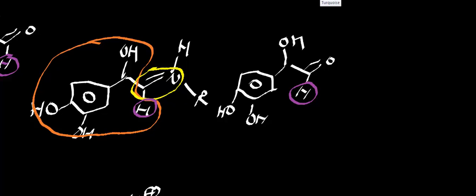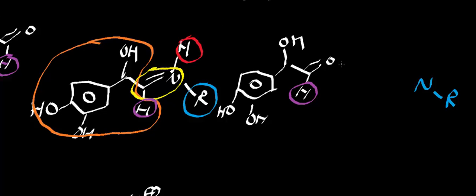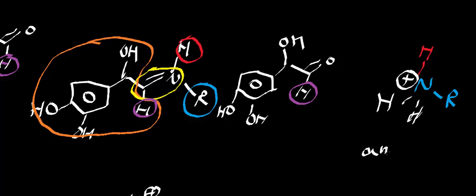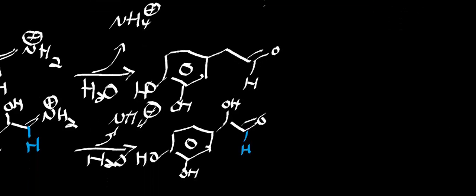Looking at the R group: the amine that gets spit off is going to contain that R group plus this proton right here. As it leaves, it picks up two extra protons, so at physiological pH this amine exists as a positive charge — we'd call it an iminium. Depending on the R group, that dictates the name. If dealing with epinephrine, the R group is a methyl group so you call it methylamine. For dopamine and norepinephrine, you just get ammonium.